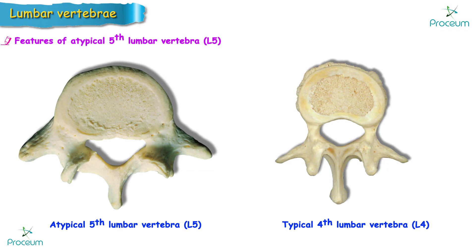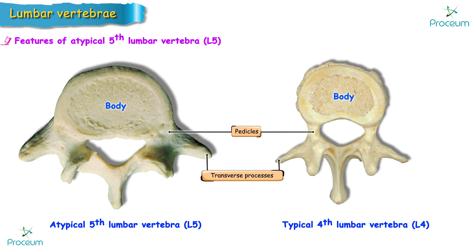Features of the atypical fifth lumbar vertebra: the transverse processes are thick, short, and pyramidal in shape. Their base is attached to the whole thickness of the pedicle and encroaches on the side of the body. They appear to be turned upwards. The spine is small, short, least substantial, and rounded at the tip.